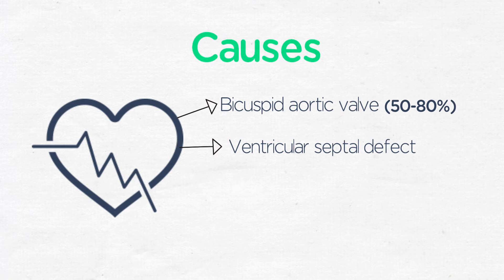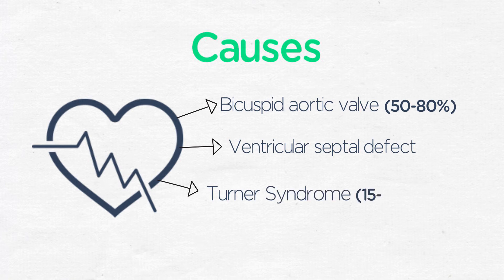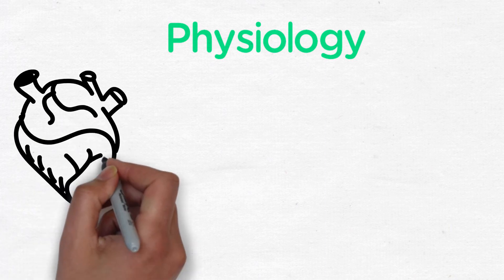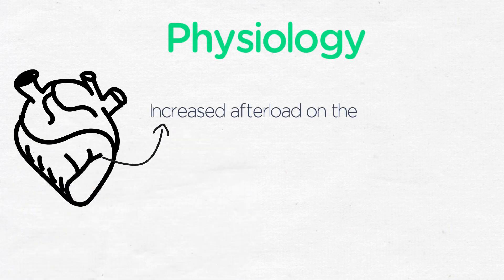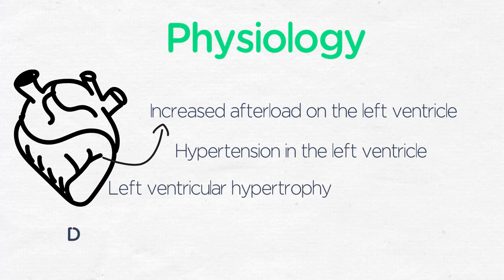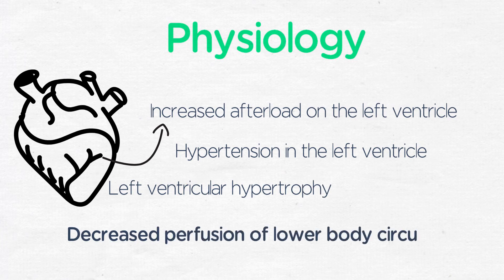This lesion can be associated with Turner syndrome, 45XO monosomy, in about 15 to 25% of patients with Turner's. The physiology of coarctation is resultant increased afterload on the left ventricle, hypertension of the left ventricle and upper body, resultant left ventricular hypertrophy, and decreased perfusion of splanchnic and lower body circulation.